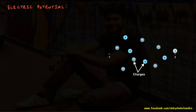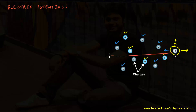Let us now discuss what electric potential means. Consider a situation where there's a group of stationary charges, both positive and negative. When a charge q is placed at some point, the group of stationary charges will exert a force on it. Therefore, work needs to be done if this charge q has to be moved from one point to another.